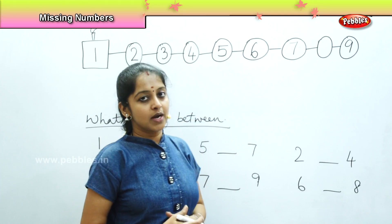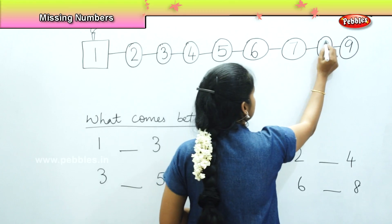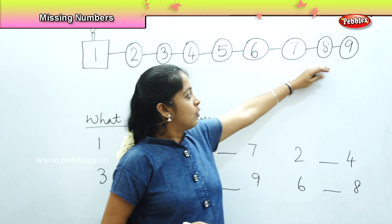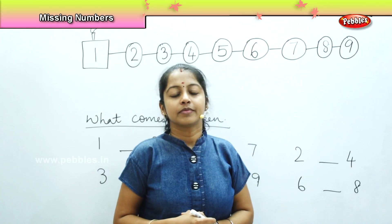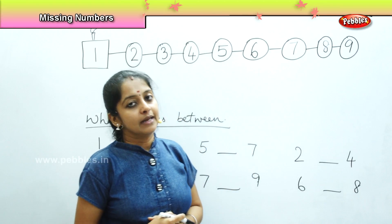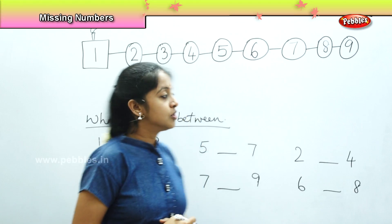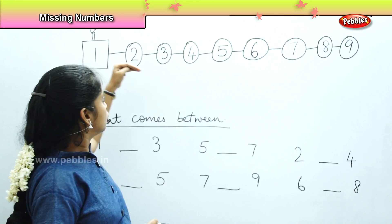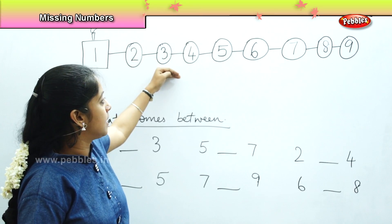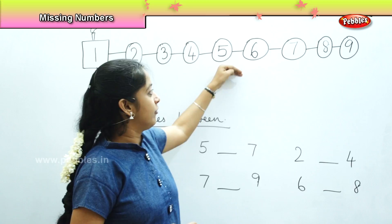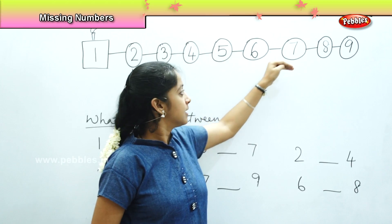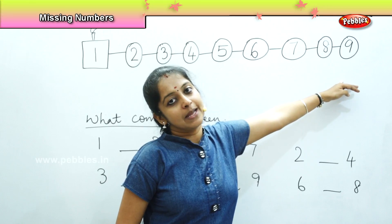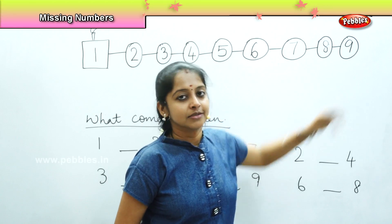What is the next one? It is number 8. Very good. And what is the last bogey? The last bogey is number 9. So shall we count the numbers again? 1, 2, 3, 4, 5, 6, 7, 8 and number 9.